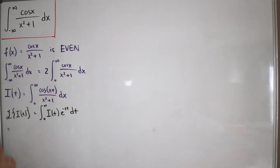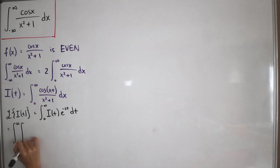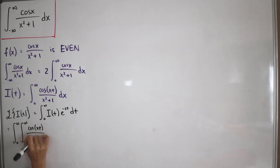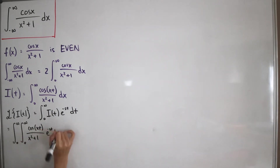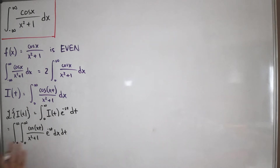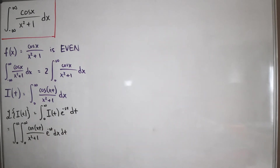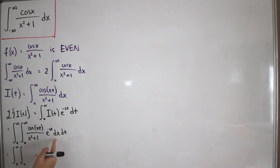Substituting back in, I now have the double integral — both from zero to infinity — of cosine of xt divided by x squared plus one, multiplied by e to the negative st, dx dt. From here, we're going to change the order of integration, flipping the differentials, which is valid as long as the function is continuous. So I rewrite this with dt first and then dx.